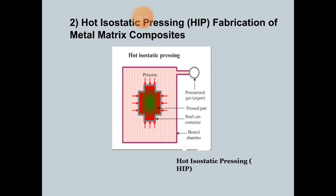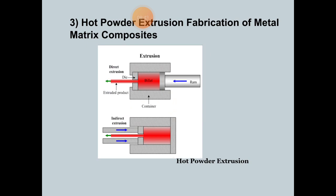With HIP, gas pressure inside the can consolidates the composite piece, and it is relatively easy to apply high pressure at elevated temperature over a variety of geometries. The third process is hot powder extrusion fabrication of metal matrix composites. The figure shows direct extrusion with a die, billet, ram, and container producing extruded parts, followed by indirect extrusion. This is sintering under pressure applied by an extruder at elevated temperature as a solid state process.